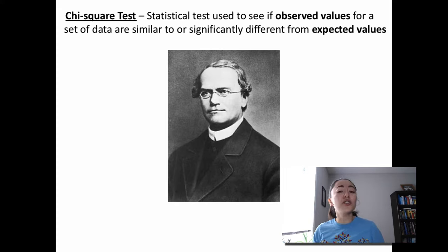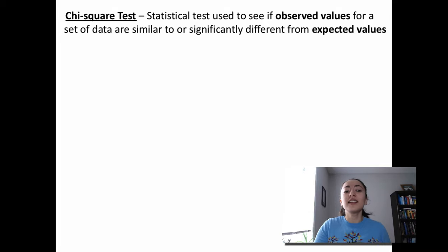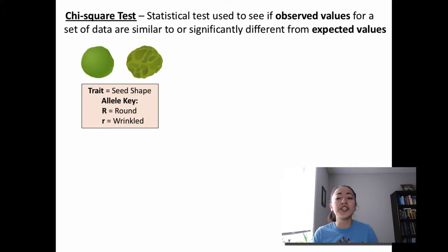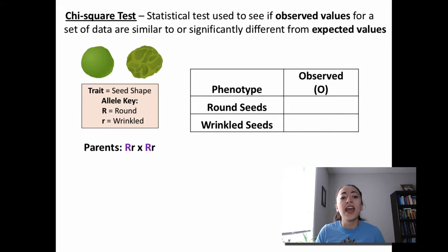Gregor Mendel actually used chi-squared statistical tests to demonstrate that he could predict the phenotypic ratio of offspring. Let's imagine we are Gregor Mendel and we are investigating the seed shape of pea plants. We think round seeds are caused by a dominant allele and wrinkled seeds are caused by a recessive allele. We cross two plants that are heterozygous for seed shape, then count the number of round seeds and wrinkled seeds in the offspring of that cross.